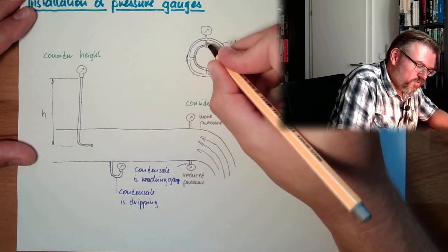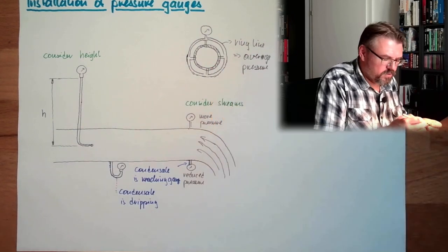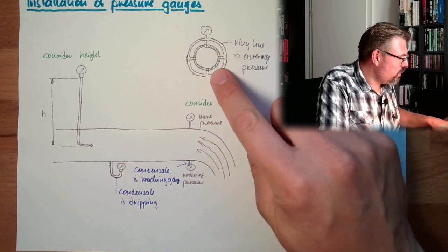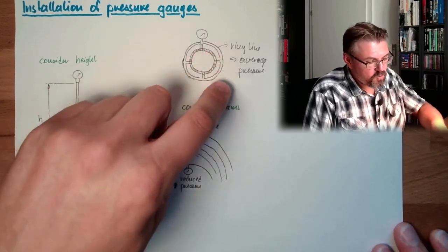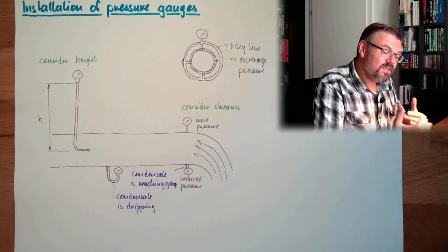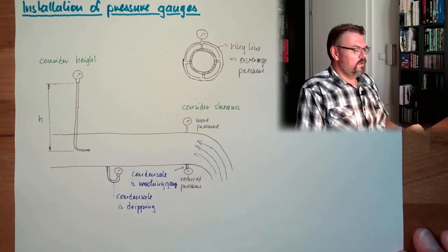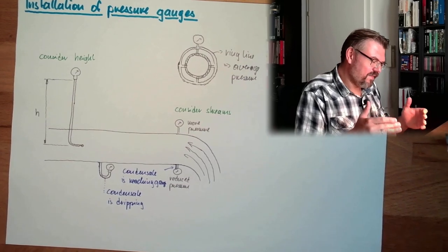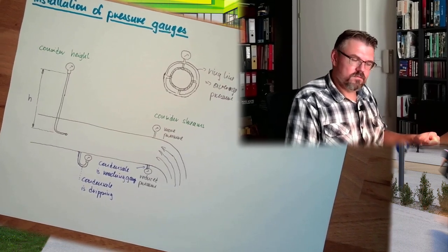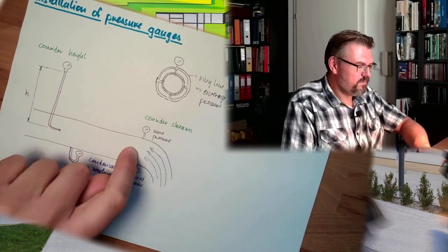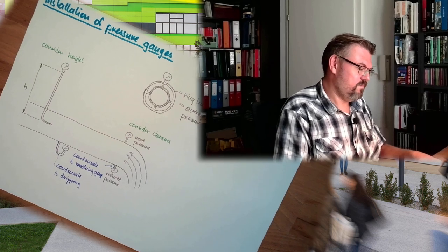Usually then there are also valves here to shut off and so on, but this is expensive. If you don't want to do this, if you have another better place, put it in a better place. If you cannot avoid, you could use it like that, that there is a ring line which is distributing the pressure from the different pressure measurement points. That are typical things which needs to be considered when installing pressure gauges somewhere. Consider streams, consider the height, consider condensating possibility. Actually that's it.